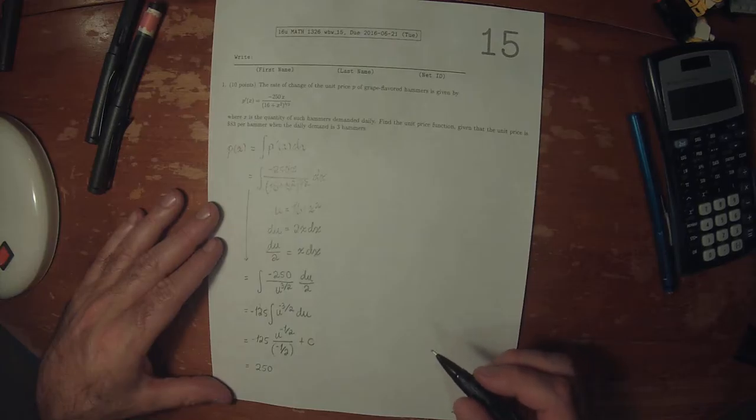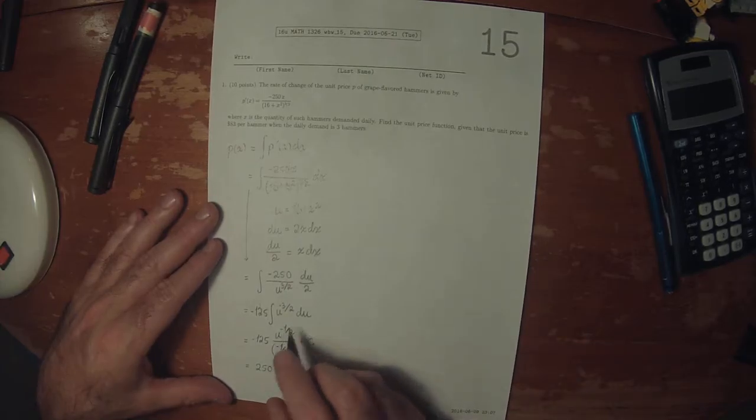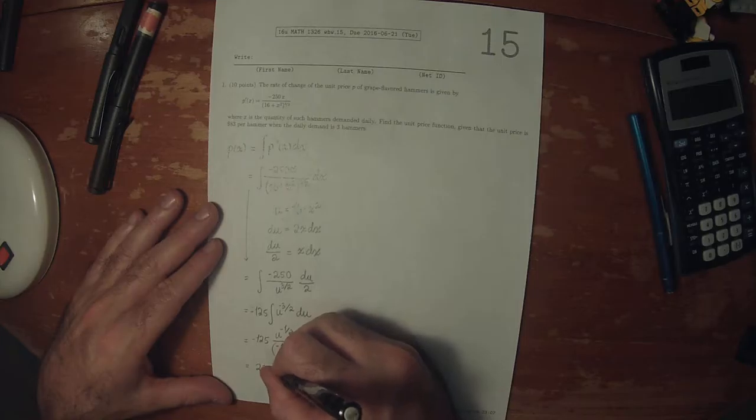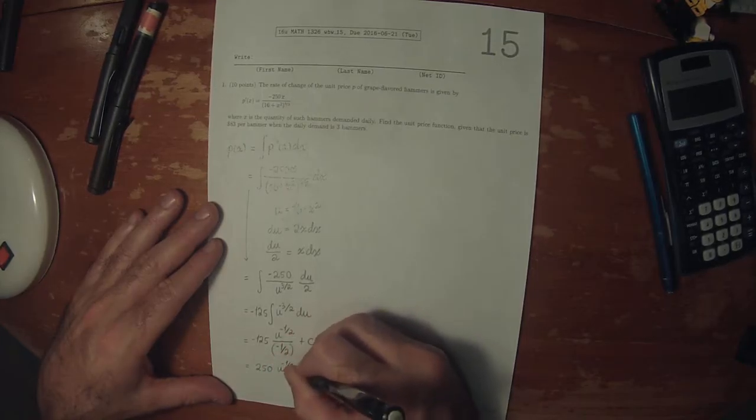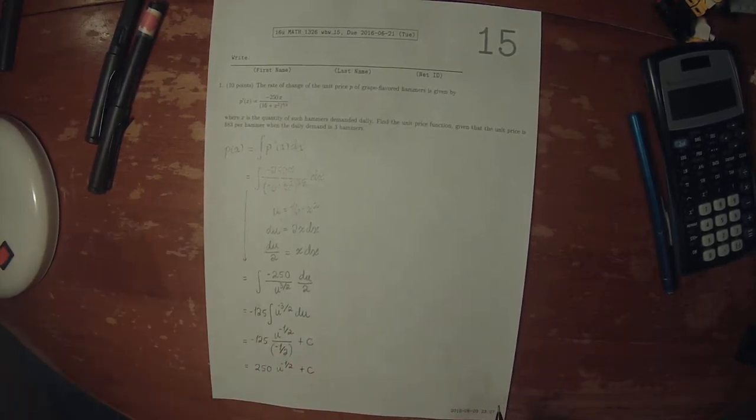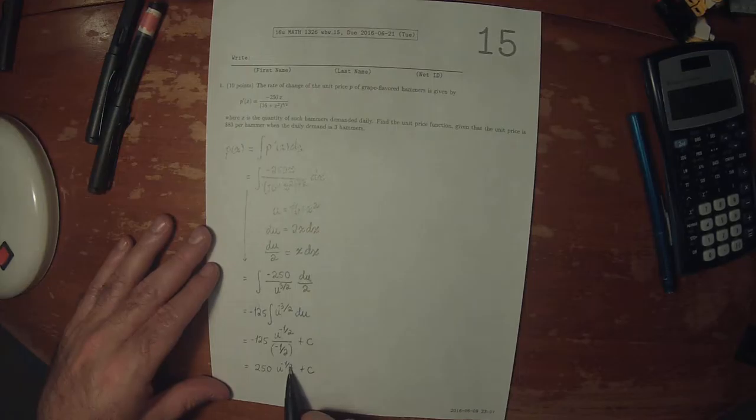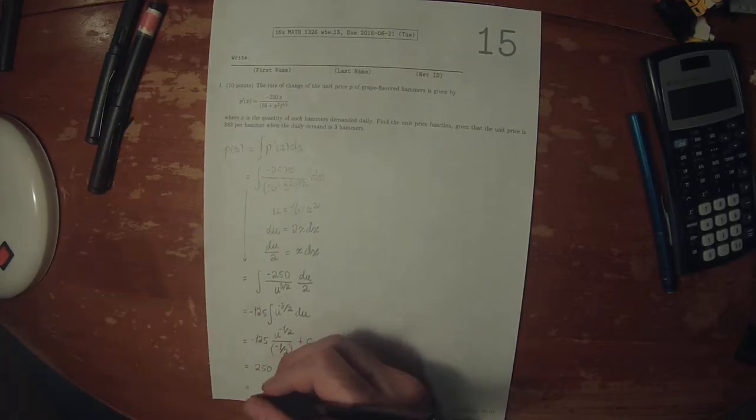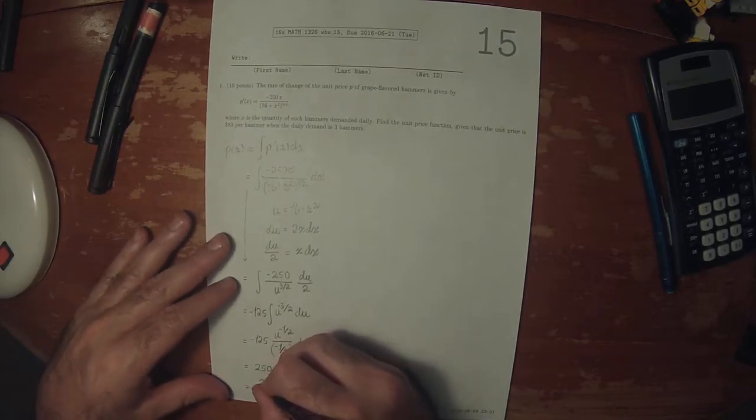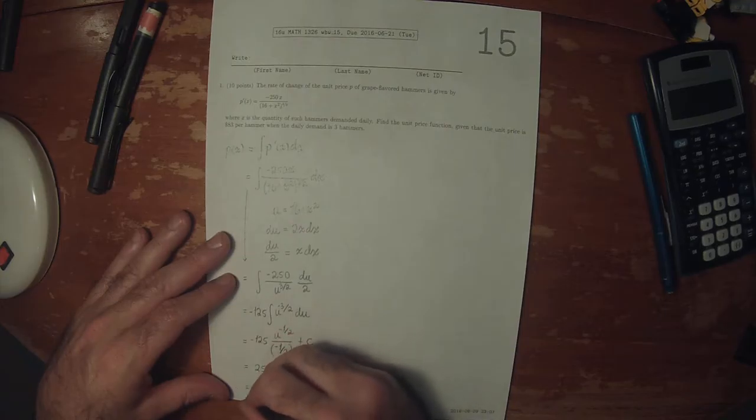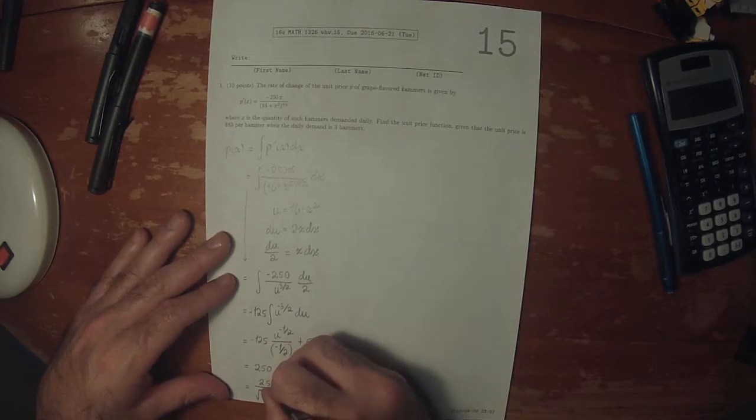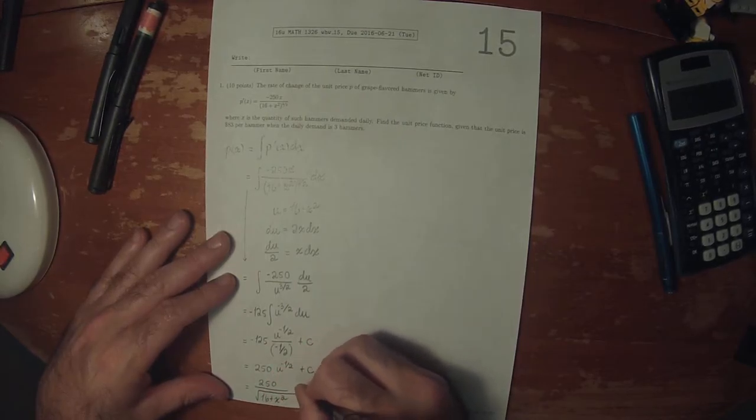And then this is u to negative one half plus a constant. So fractional exponent half is equivalent to square root, and since it's negative it needs to be in the denominator. So this would be 250 over square root of 16 plus x squared plus a constant.